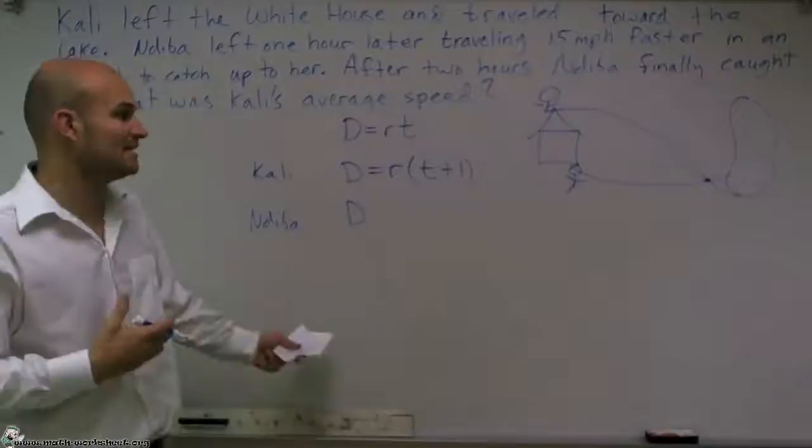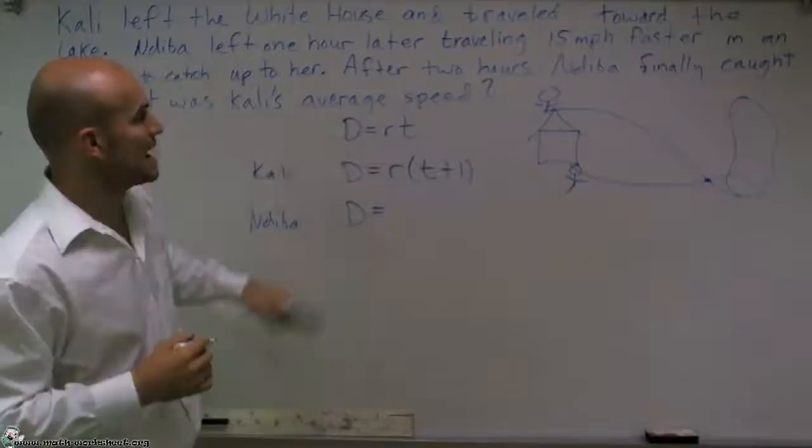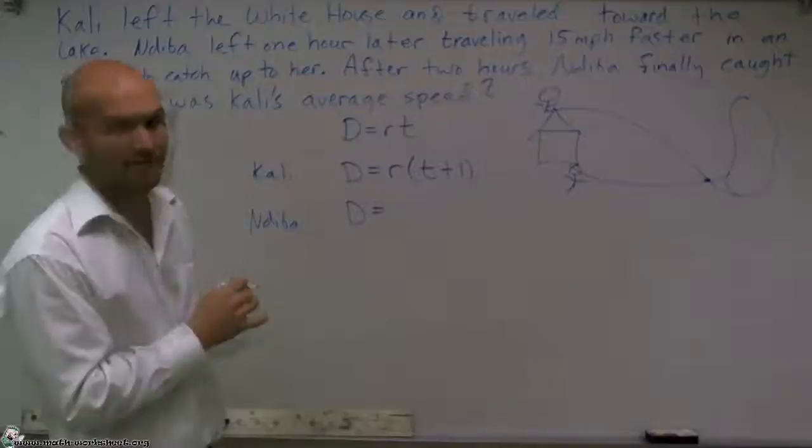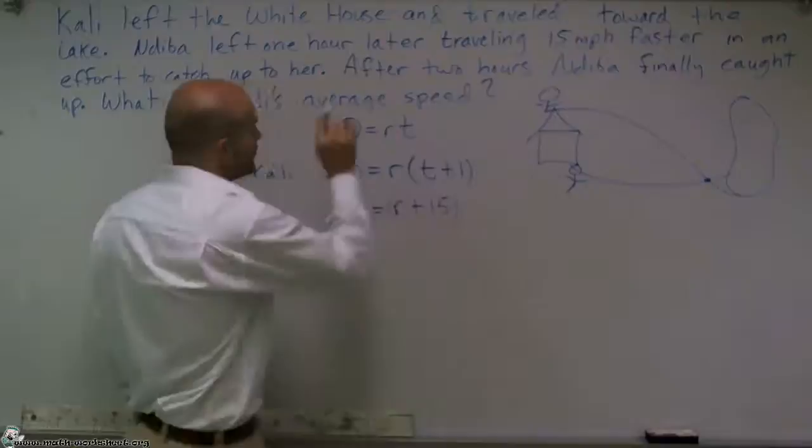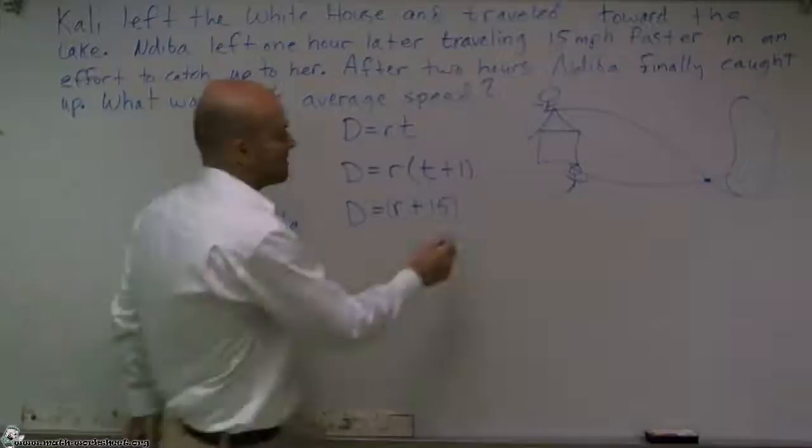So now let's look at Nadeeba. Nadeeba's distance, again, for them to meet each other was D. We don't know what that distance was. Her rate is now going to be 15 miles per hour faster, so I can say R plus 15. So no matter whatever Callie's rate was, I'm going to add 15 to it, and then I'm going to multiply by whatever the time was.